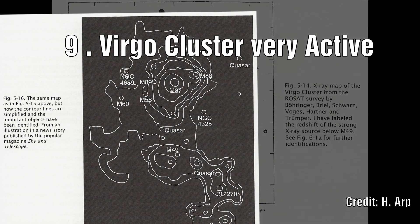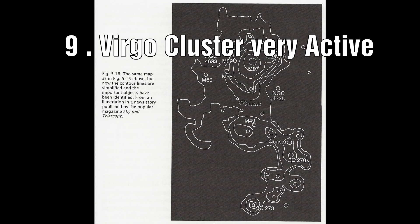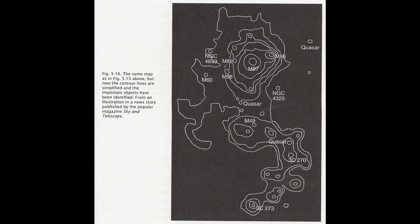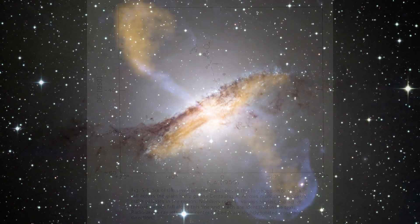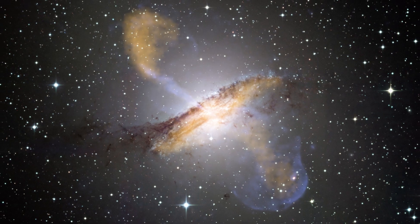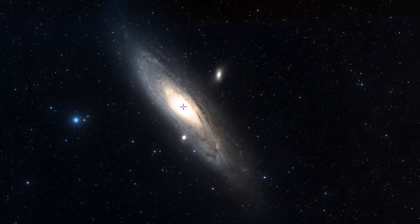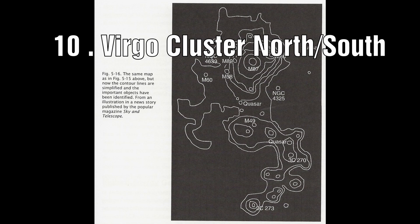Number 9: The Virgo cluster seems to be a very active region where new galaxies and quasars are being formed. It is likely that Centaurus A was created out of this, and this may also hold for Andromeda and our own Milky Way. Number 10: The Virgo cluster seems to be more active in the northern region compared to the southern region.